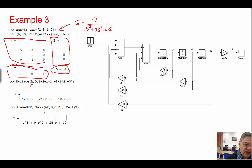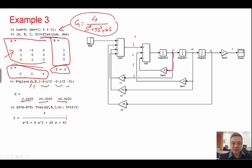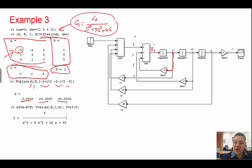You can use place(A, B, P) with the desired poles as specified. The Simulink implementation uses integrators for the relationship between X and X-dot. X1-dot is minus 5X1 minus 4X2 plus 0 of X3 plus 1 multiplied by U. That's the input.